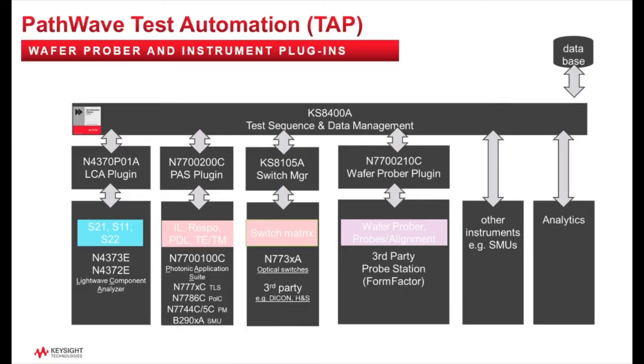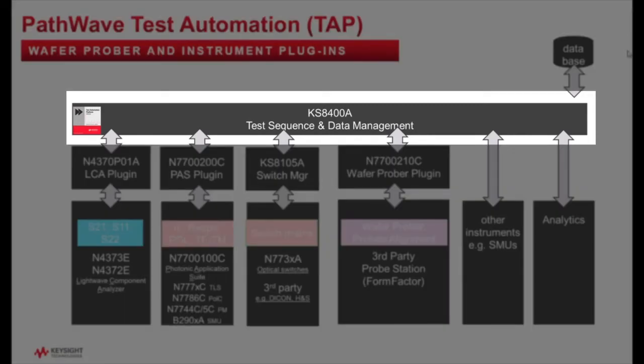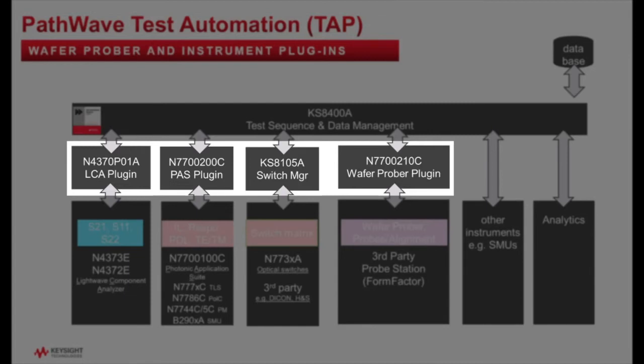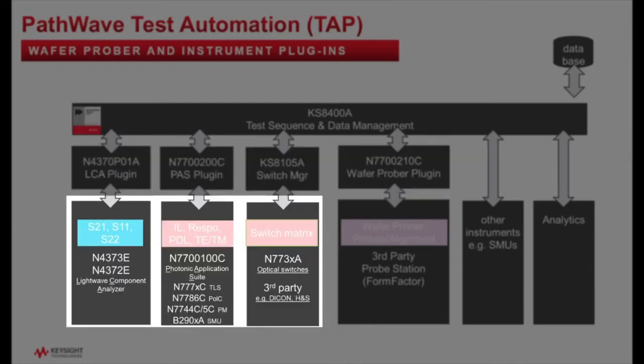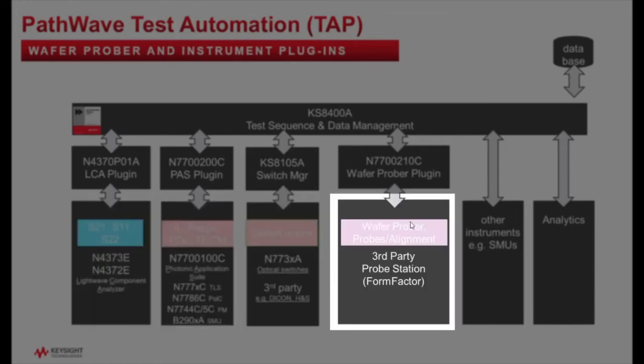The third pillar, as mentioned in the introduction, is based on automation of silicon photonics testing. Keysight's approach of test automation relies on Pathwave test automation. The KS8400A test sequencer connects to instrument plugins which communicate to the specific instruments, not only to our instruments but also to the wafer prober station.